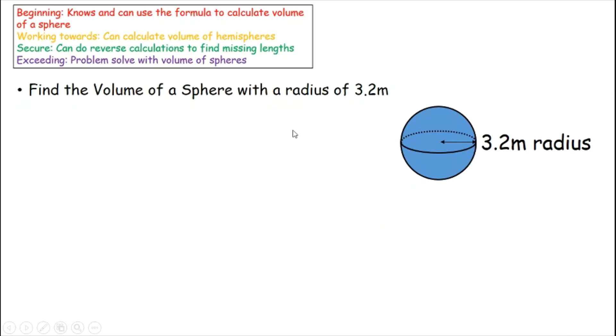Here is a sphere. It has a radius of 3.2 and it wants the volume. You will be given the formula.